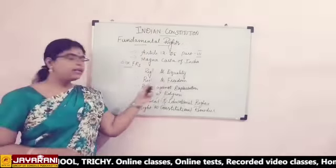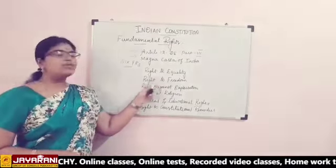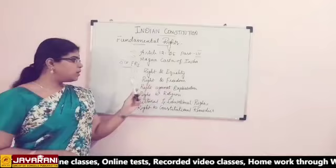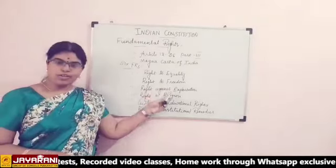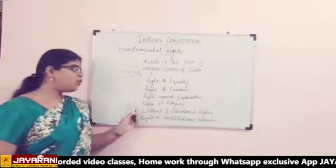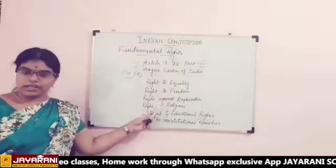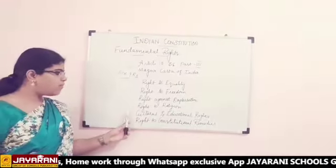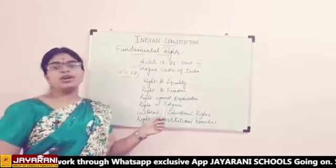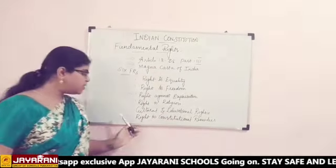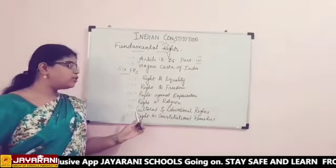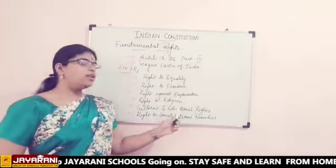The 6 fundamental rights are: Number 1, Right to equality. Number 2, Right to freedom. Number 3, Right against exploitation. Number 4, Right to religion. Number 5, Cultural and educational rights. Number 6, Right to constitutional remedy.